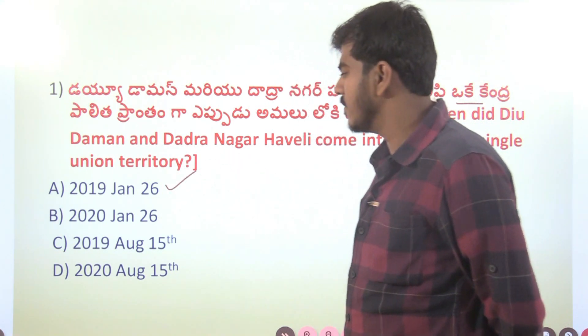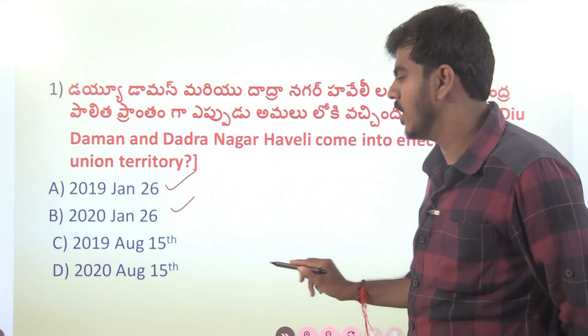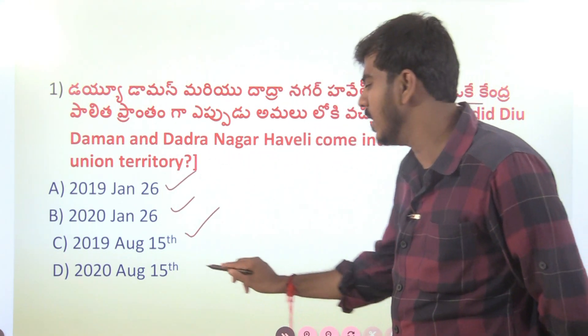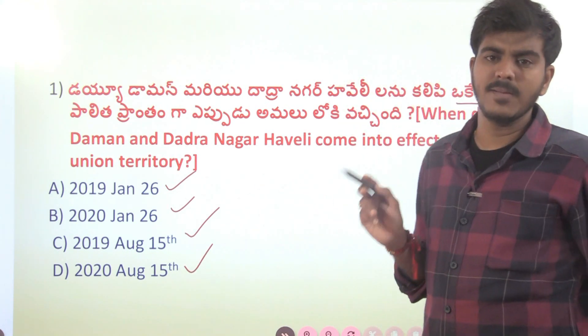Regarding important dates — in January 2019, or August 15th 2019, or August 15th 2020 — we will discuss these significant dates in Indian constitutional history.